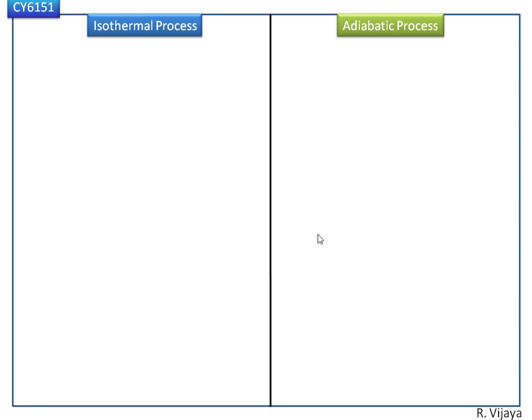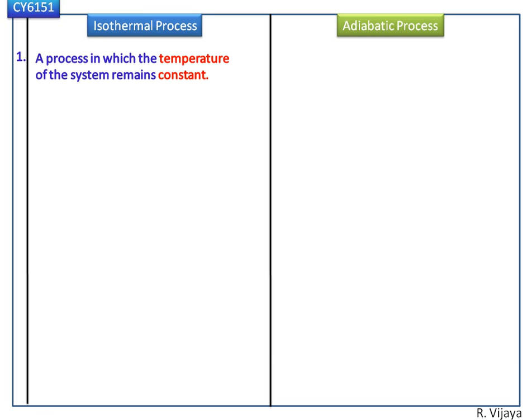Now we see what is isothermal process and adiabatic process, and the difference between isothermal and adiabatic process. A process in which the temperature of the system remains constant is called isothermal process.